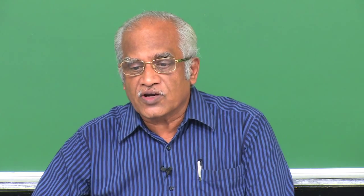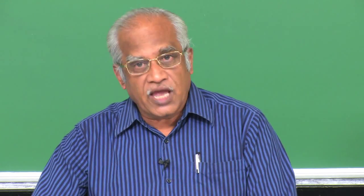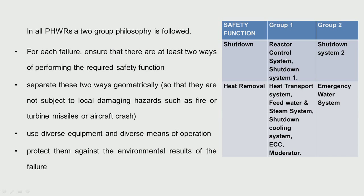Looking at the safety function of shutdown: the reactor control system — control rods and adjuster rods — along with shutdown system one are grouped into group one. Shutdown system two is the other group, so there is independence between group one and group two. For heat removal, the heat transport system, feed water, steam system, shutdown cooling systems, emergency core cooling, and moderator are all in one group. The emergency water system is the other independent group. This two-group philosophy is what is followed in our pressurized heavy water reactors.